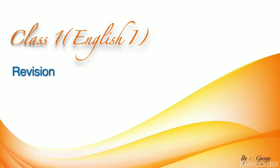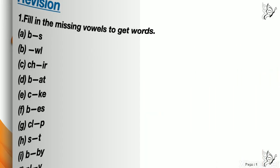So let's start. Question number one: fill in the missing vowels to get words. Number a: b dash s. Number b: dash w l. Number c: c h dash i r. Number d: b dash a t.